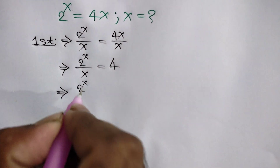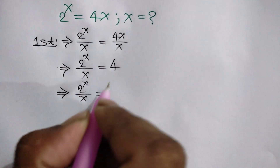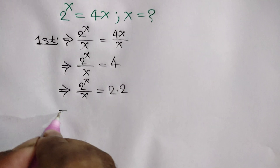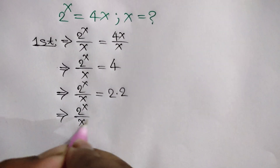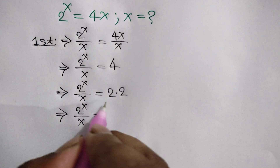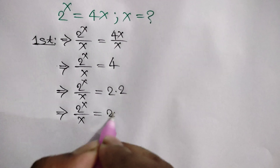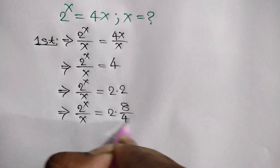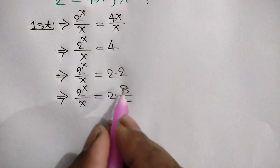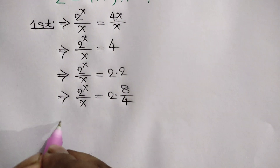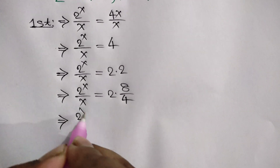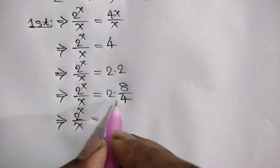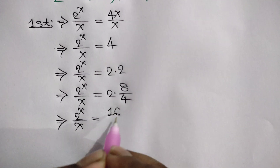2 to the power x over x is equal to 4, which can be written as 2 times 2. This 2 can be written as 8 over 4 — we know 8 over 4 is equal to 2. So, 2 to the power x over x is equal to 8 times 2, which is 16, so we can write 16 over 4.